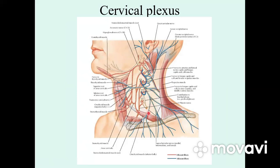The supraclavicular nerves continue vertically downward and divide into three: the medial supraclavicular nerve, the intermediate, and the lateral. They run around the corresponding one-third part of the clavicle, continue to the level of the first and second ribs of the thoracic cavity, and innervate the skin around them as well as the skin around the deltoid muscle and greater pectoral muscle.